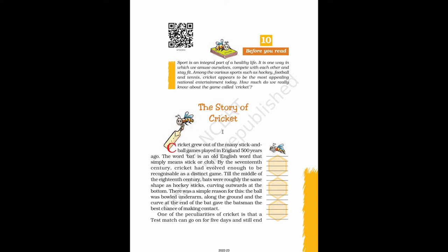Part 1. Cricket grew out of the many stick and ball games played in England 500 years ago. The word 'bat' is an old English word that simply means stick or club. By the 17th century, cricket had evolved enough to be recognizable as a distinct game. Till the middle of the 18th century, bats were roughly the same shape as hockey sticks, curving outwards at the bottom. There was a simple reason for this: the ball was bowled underarm, along the ground, and the curve at the end of the bat gave the batsman the best chance of making contact.